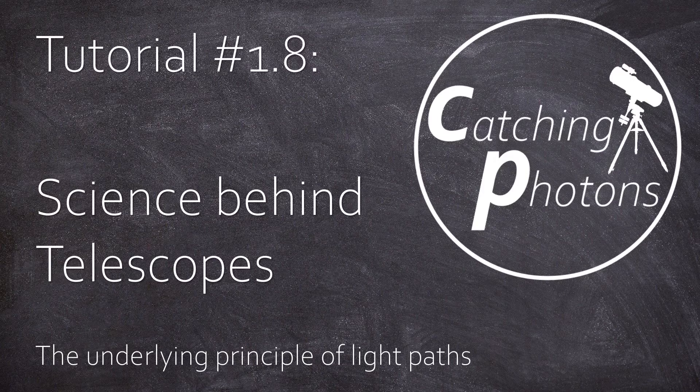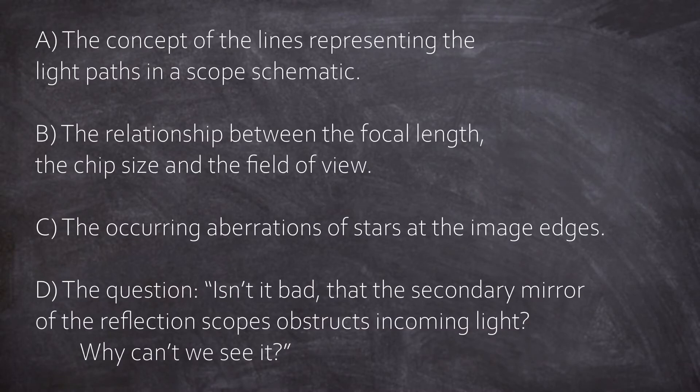Hi, it's Chris. Welcome back. This episode will be a bit technical, covering aspects I couldn't add to the last video because it would have confused everyone, especially me. So we want to cover four topics of telescopes: the concept of the lines representing the light paths in a scope schematic, the relationship between the focal length, the chip size, and the field of view, the occurring aberrations of stars at the image edges, and the question isn't it bad the secondary mirror of reflection scopes obstructs incoming light, why can't we see them.